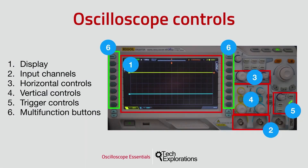Oscilloscopes vary in sizes, capabilities, and organization of the user interface. Benchtop oscilloscopes look like the one in this photo, but there are other types like USB or PC oscilloscopes and portable oscilloscopes. PC oscilloscopes don't have a physical user interface apart from their input and USB connectors — they use a computer to implement an interface with a display and the various knobs and buttons. I'll show you how to use a PC oscilloscope in this course.